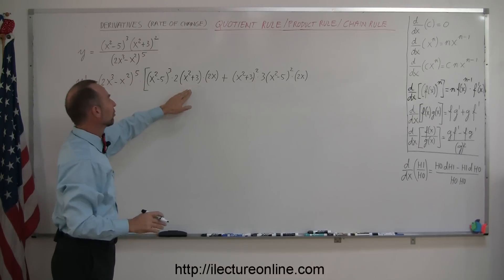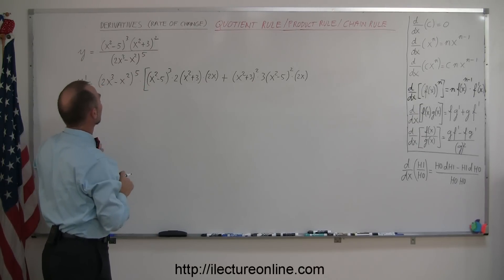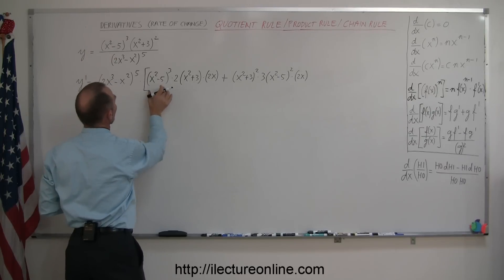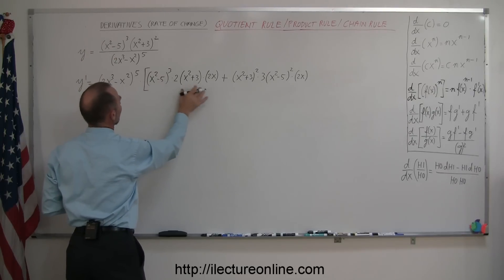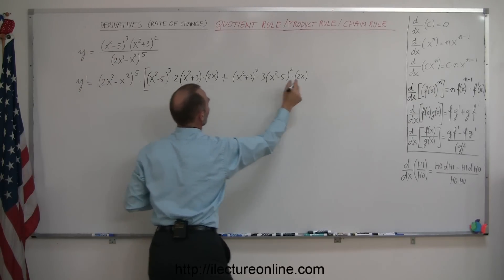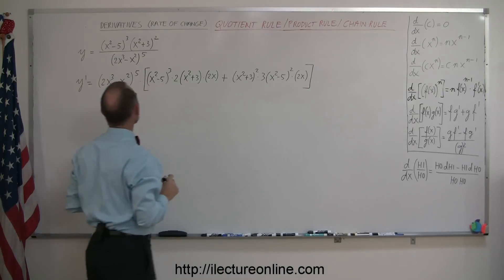And the second is a product, so that means we have to use the product rule, so that means the first times the derivative of the second, plus the second times the first.